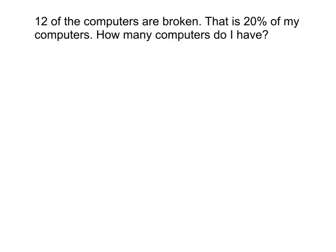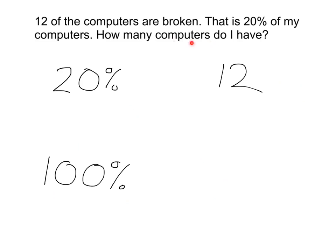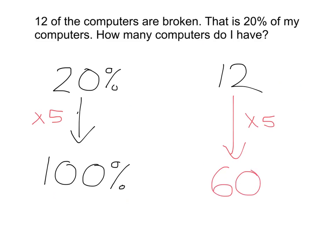Let's look at another example. If I know that 12 of my computers are broken and that's 20% of my computers, I want to know how many computers I have. What I know is that 20% of my computers is 12 computers. I want to know what 100% of my computers is — that's the total. To get from 20% to 100%, I have to multiply by 5. So each group of 12 computers represents 20%, and I'm going to have five of those groups. Multiplying by 5 gives me 60 total computers. 12 out of 60 is 20%.